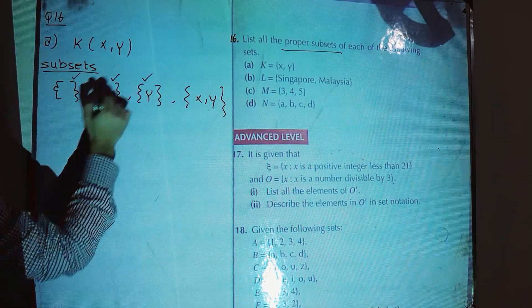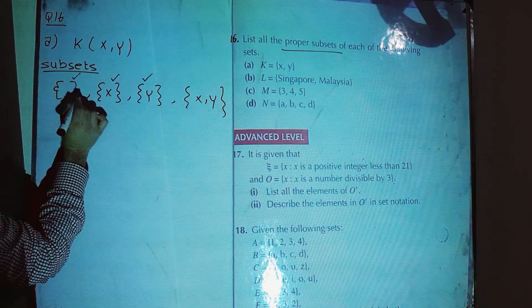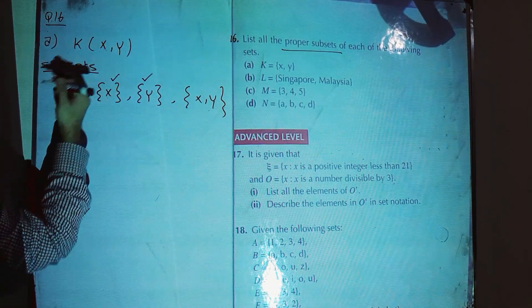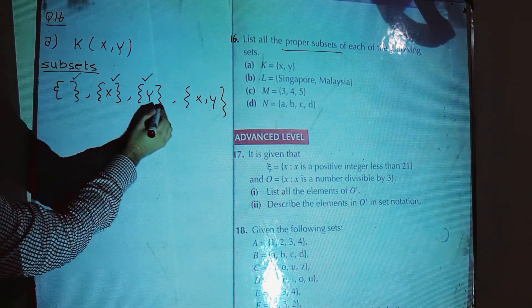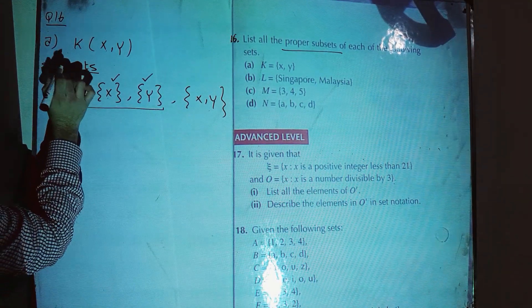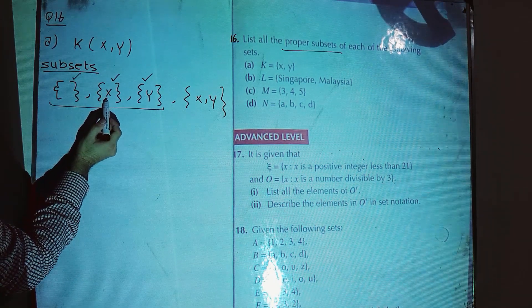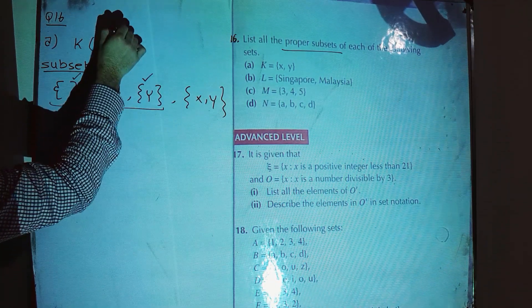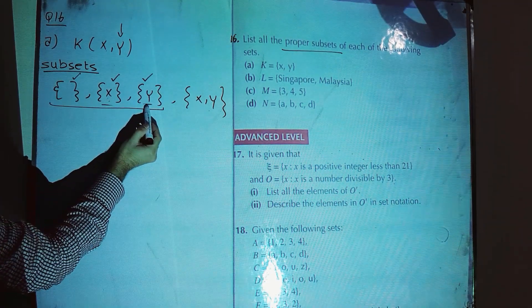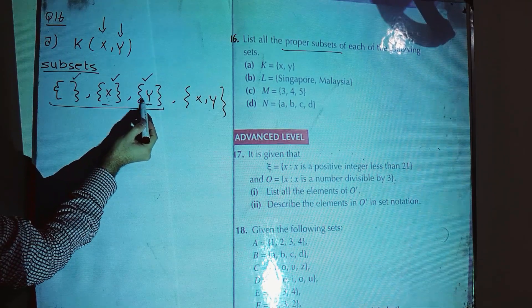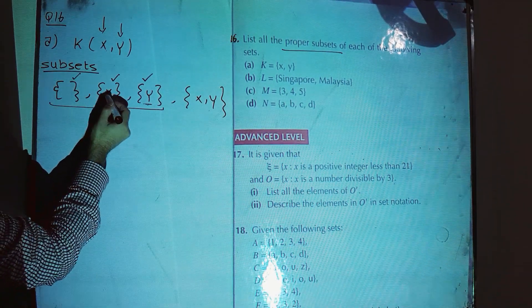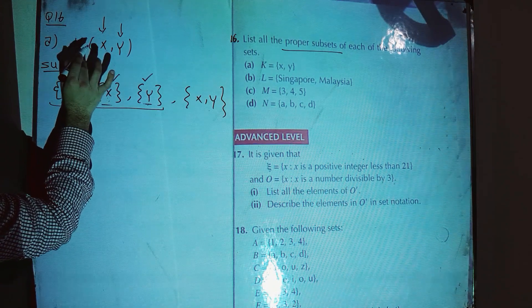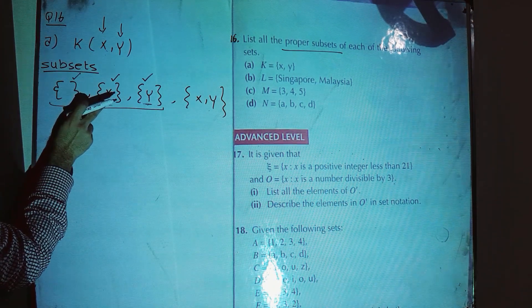However, these three — the empty set, {x}, and {y} — are the proper subsets, because their elements are part of K, and K has at least one element that is not in each of them. For example, {x} is a proper subset because K has element y which is not in this subset. Similarly, {y} is a proper subset because K has element x which is not in it.